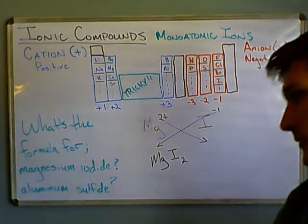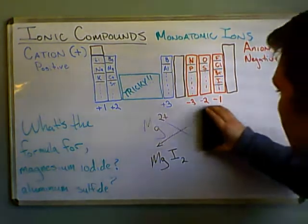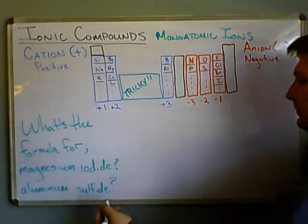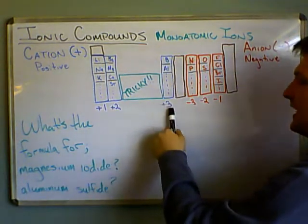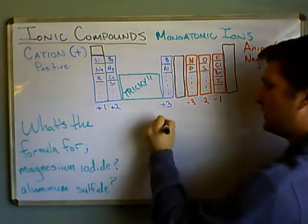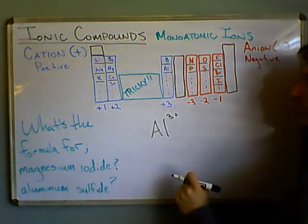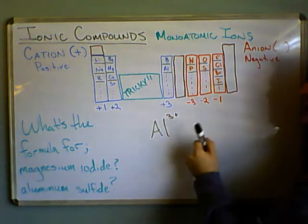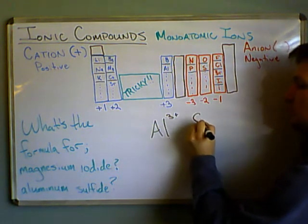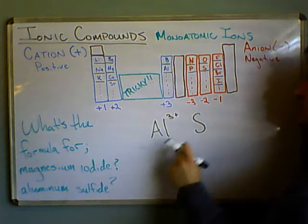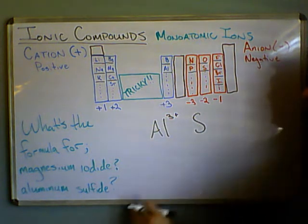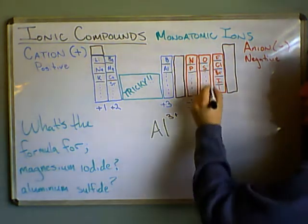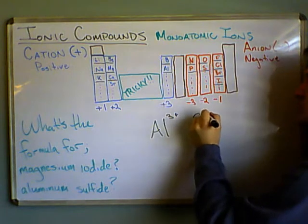How about aluminum sulfide? Well, aluminum, I know it's right here. So as an ion, it's going to have a charge of 3+. Sulfide, well, it's right here, so it likes to have a charge of minus 2. Sulfide comes from sulfur, and you drop the ending, add the -ide. So you know it's a monatomic ion. Right there, it has 2 minus.